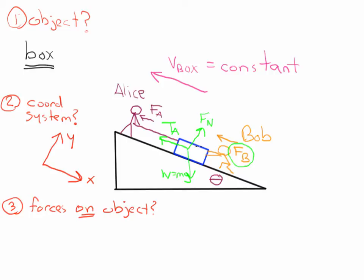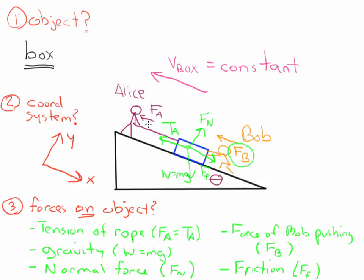Recall that the frictional force opposes either the direction of motion or the potential for motion. When the box is sitting still, if there were no friction, it would slide down the hill. However, in this case the velocity of the box is going up the hill, so the force due to friction is actually pointing down the hill. To recap, there are five forces: the tension on the rope due to Alice pulling, T sub A; gravity, which is weight Mg; the normal force perpendicular to the surface, F sub N; the force of Bob pushing parallel to the hill, F sub B; and the force of friction opposing the direction of motion, F sub F.